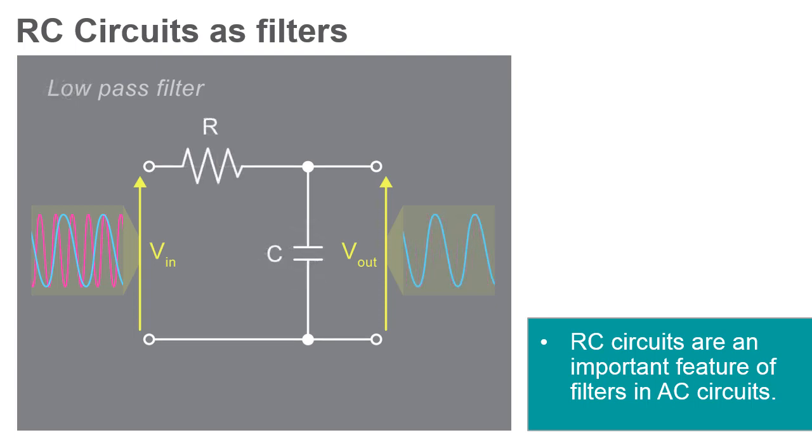By changing the positions of the resistor or the capacitor, simple first-order low-pass or high-pass filters can be made.